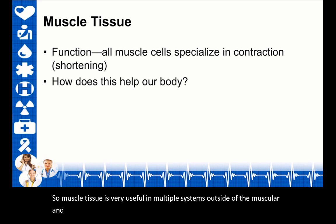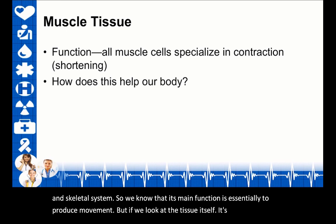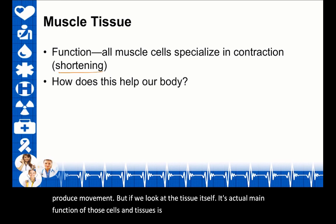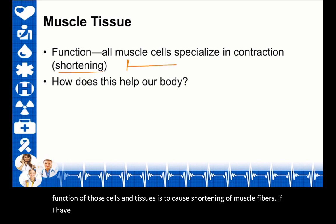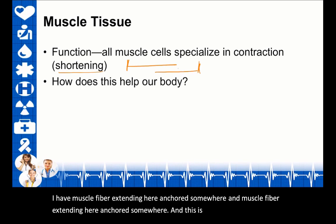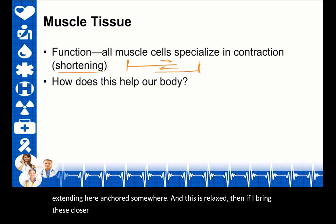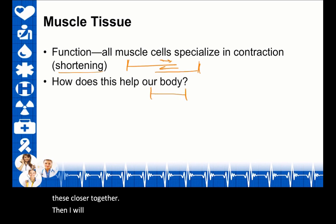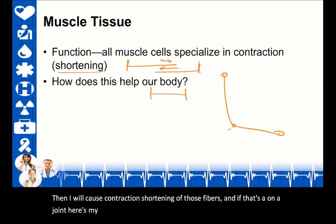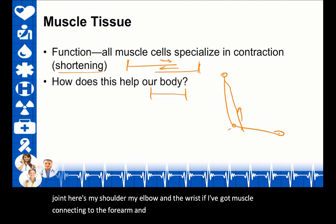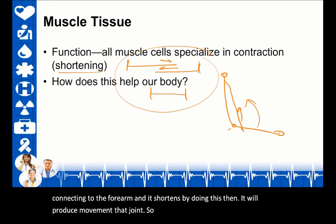Muscle tissue is very useful in multiple systems outside of the muscular and skeletal system. Its main cellular function is to cause shortening of muscle fibers. If muscle fiber is anchored on both ends in a relaxed state, bringing those ends closer together causes contraction—shortening of those fibers. If that's on a joint connecting to the forearm, shortening will produce movement at that joint.